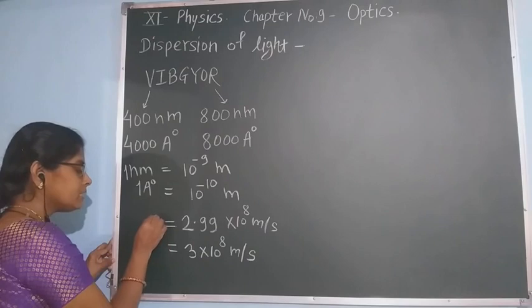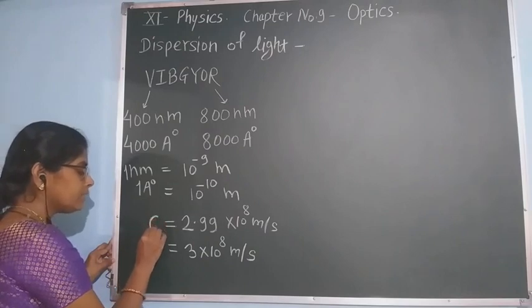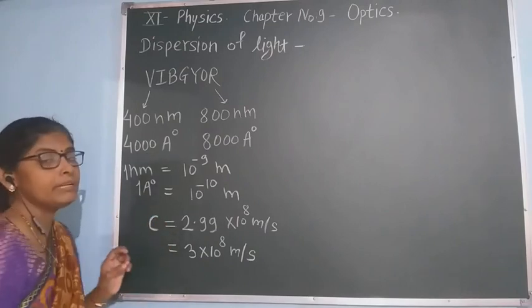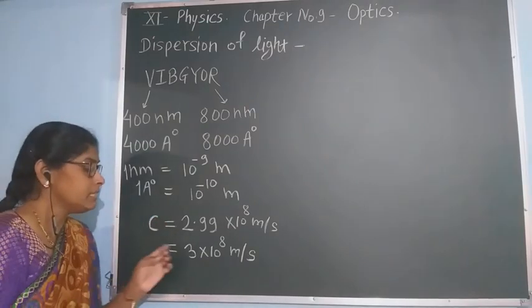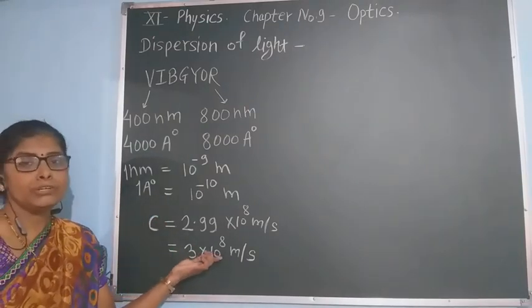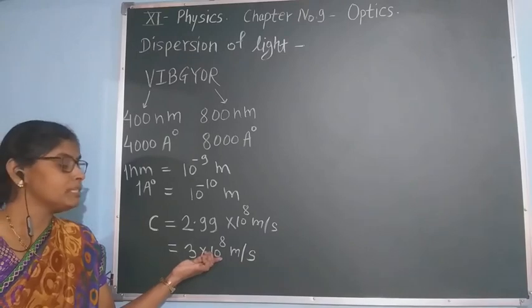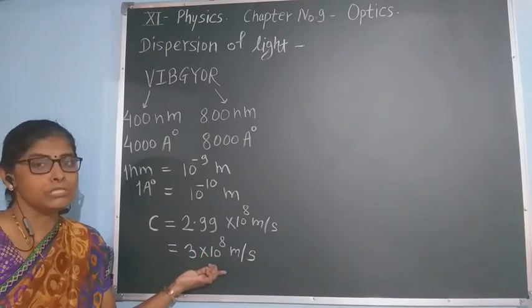The velocity of light is generally shown by the letter capital C. This C means the velocity of light in vacuum is always constant. Nothing travels faster than the velocity of light.